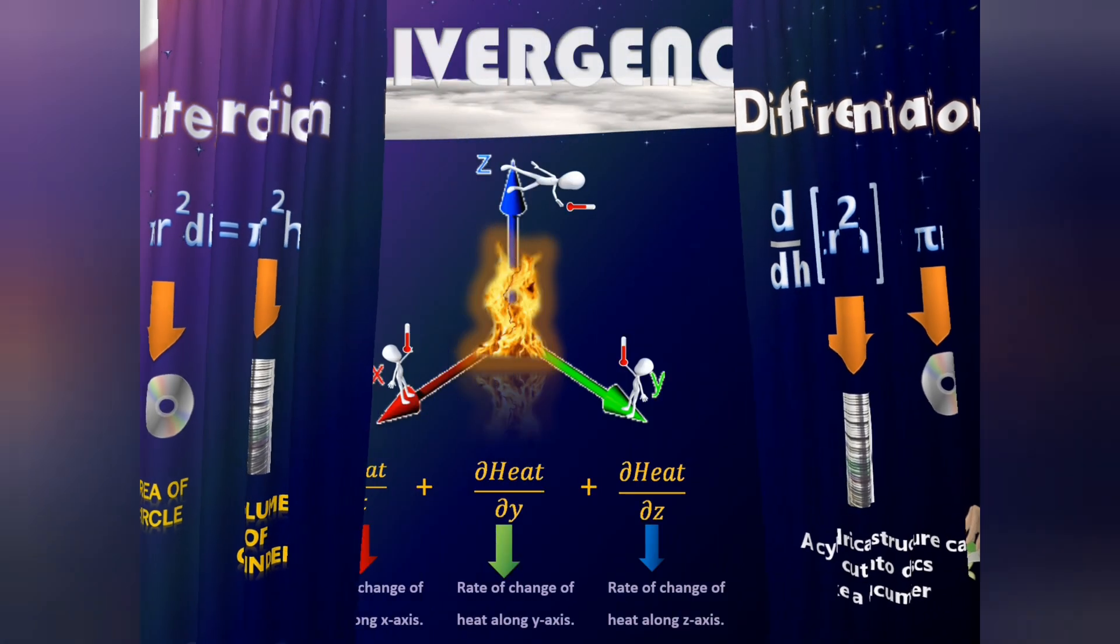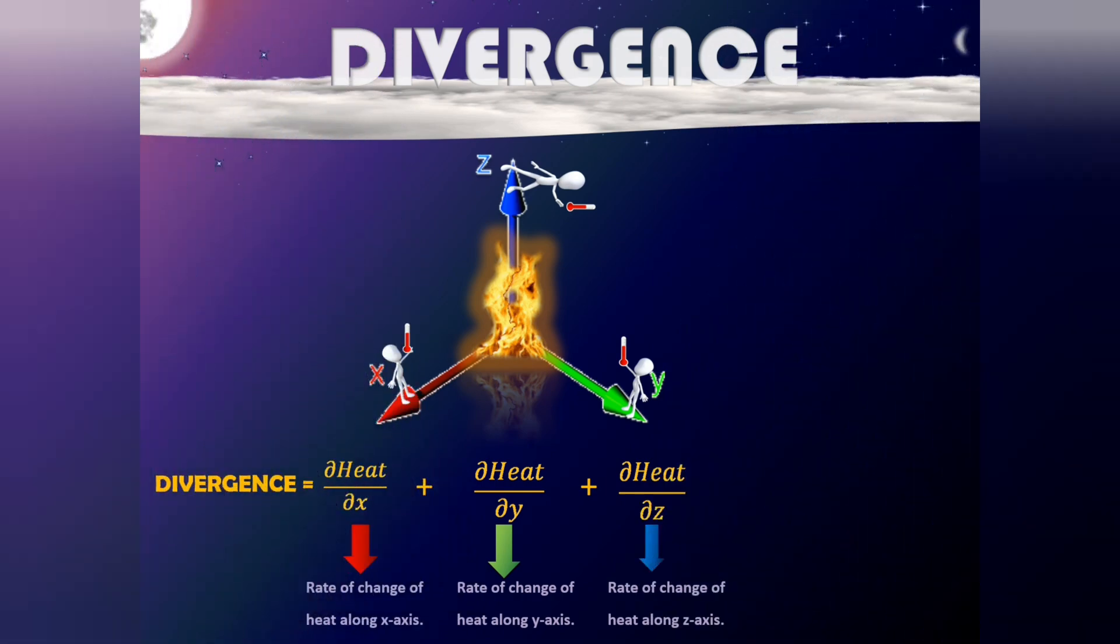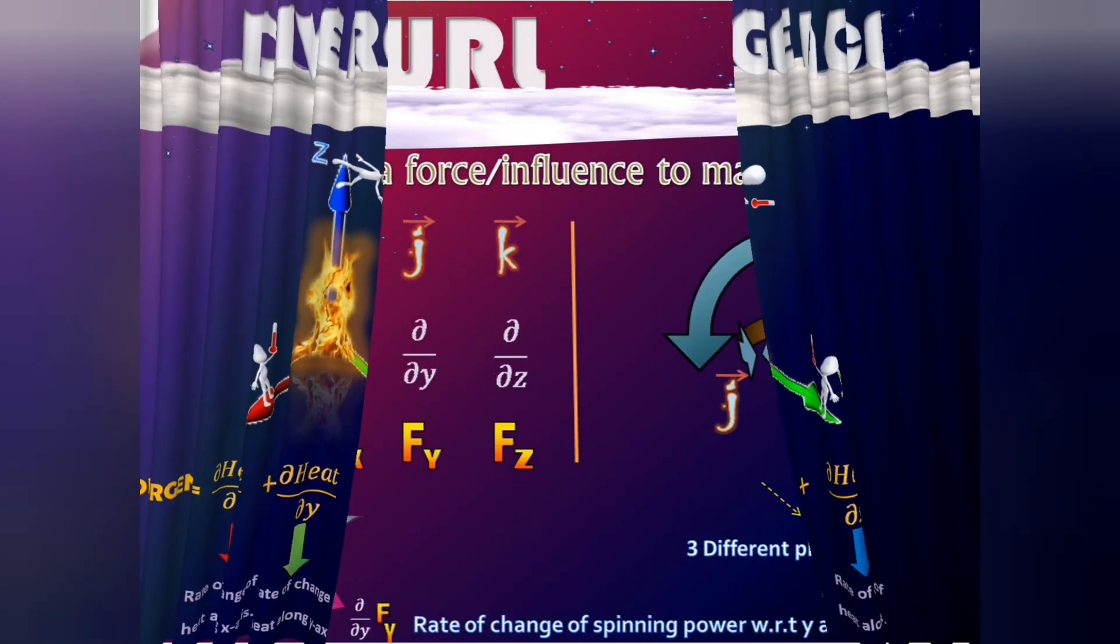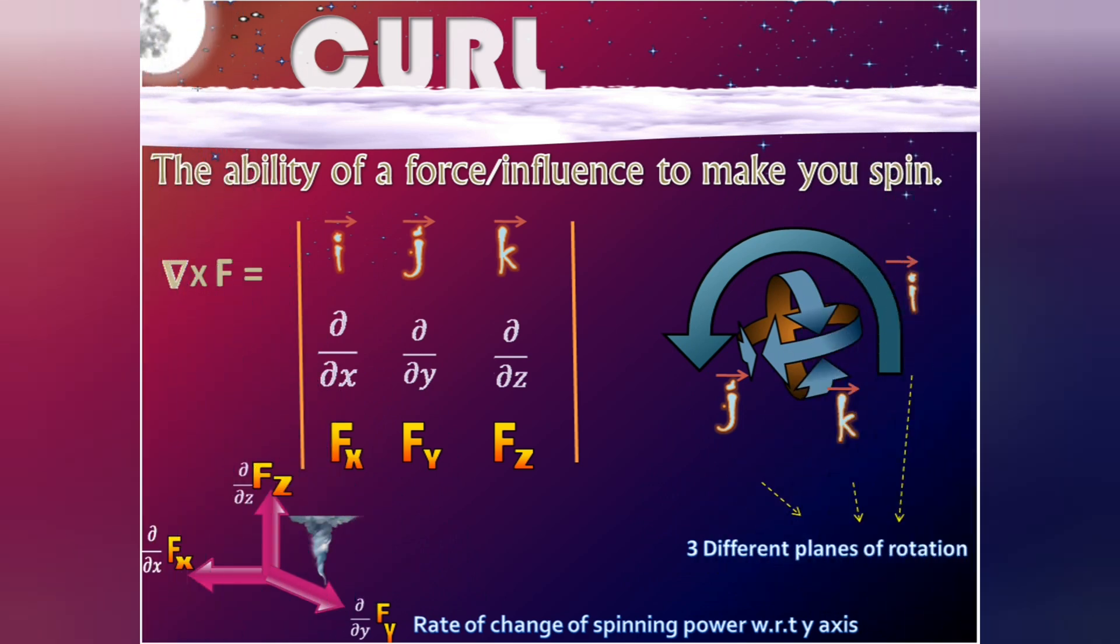Divergence is the rate of change of a quantity, for example heat, along the x, y and z-axis simultaneously. What if curl is a measure of how much a field can make you spin? What if i, j and k in the formula indicate different planes of rotation?